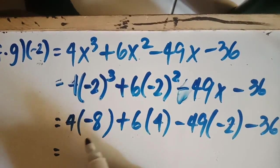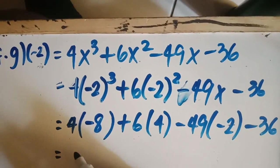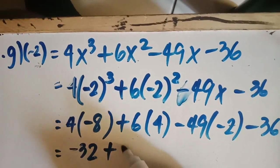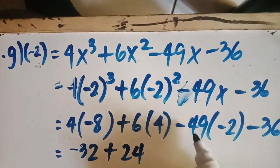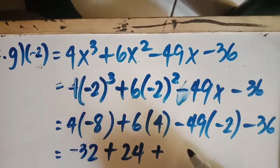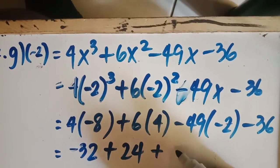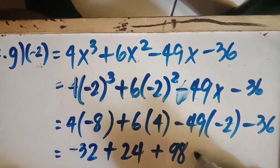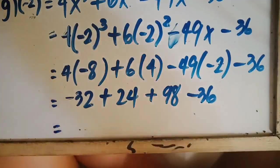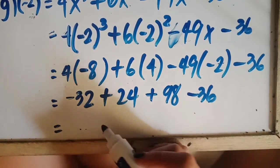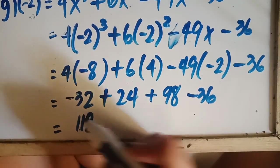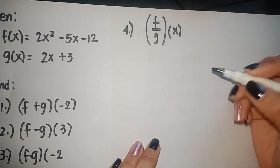Let's have the first term. So we have 4 times negative 8, this is negative 32, plus 24. In this case, we have negative times negative, so this will be positive. 49 times 2, so we have 98 minus 36. So let's proceed with the final answer. We have 180.